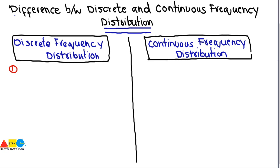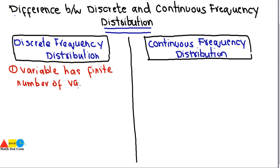The first difference between them is that the variable has a finite number of values. When you come across observations of a certain variable that are finite, countable, or discrete, you have to use the method of discrete frequency distribution.